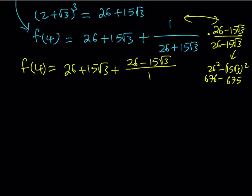Awesome. Everything is awesome. So we can just go ahead and simplify this, because dividing by 1 is going to give me the same thing. 15 root 3 and negative 15 root 3 are going to cancel out. And this is going to leave us with f of 4 equals 26 plus 26, which is equal to 52.